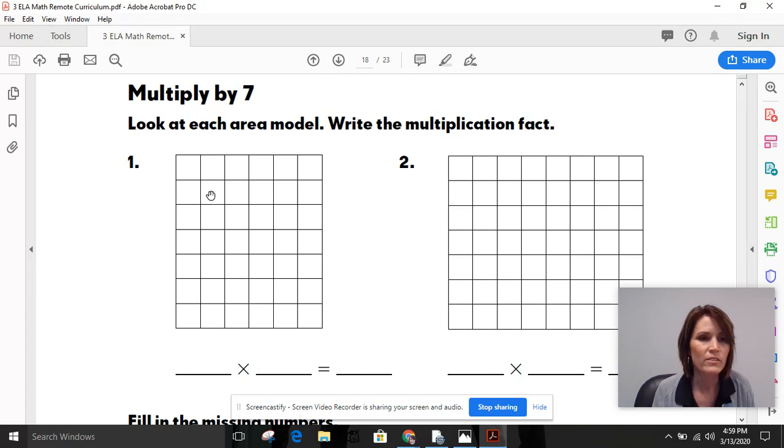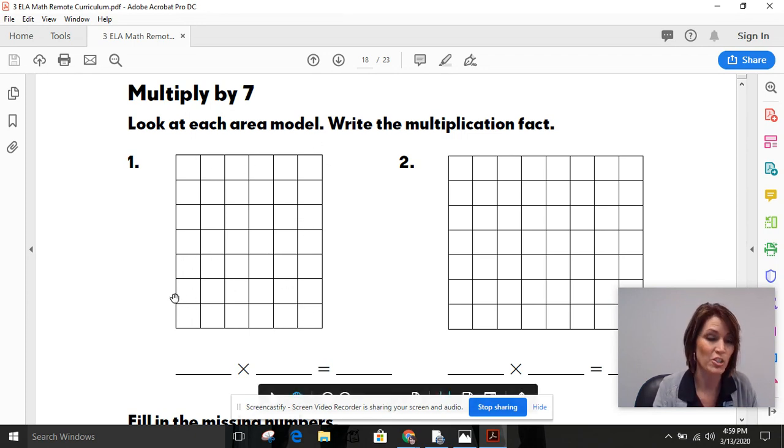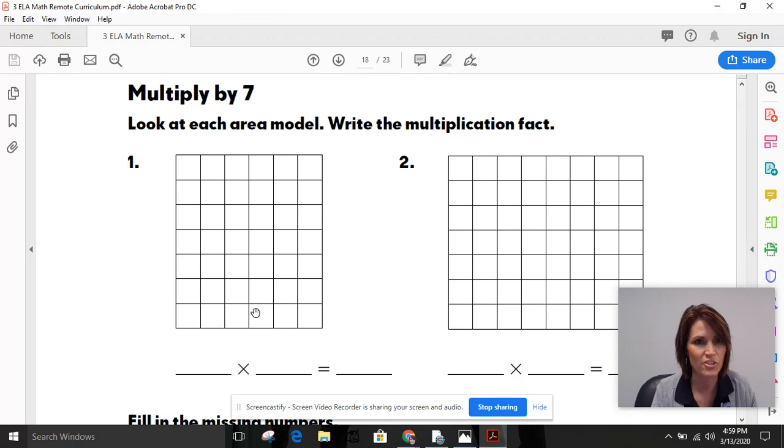So yesterday, we looked at a page where we practiced looking at a group of five, and then a group of two. So you could break this apart and find the area of this group of five, and then find the group of two. You could count, you could use repeated addition. But let's think about our strategies.